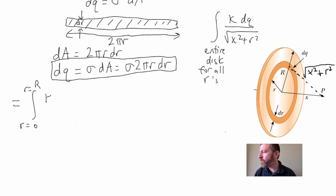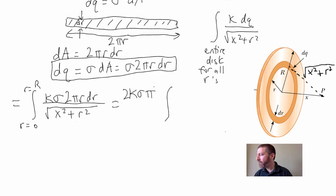And I'm going to start with the integral from R equals 0 to R equals big R, the outer radius of the disk, of KDQ. Instead of DQ, I'm going to go ahead and put in this: K sigma 2 pi R DR over square root of X squared plus R squared. And I'm going to rewrite this one more time, taking out all of the constants that I don't need. So that'll be 2 times K times sigma times pi. Those are all the constants.